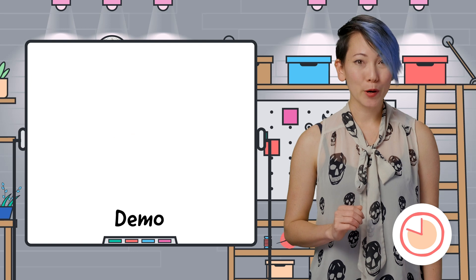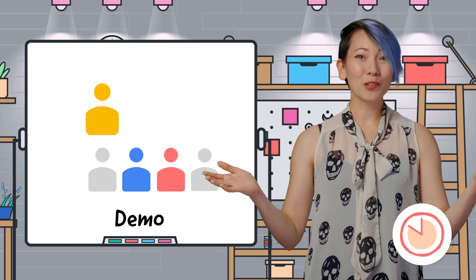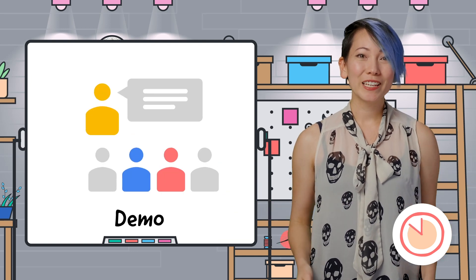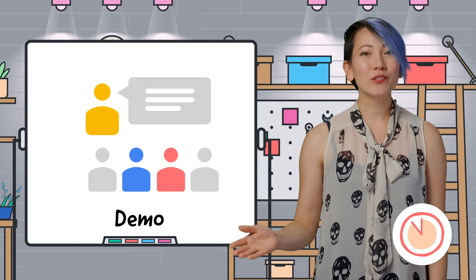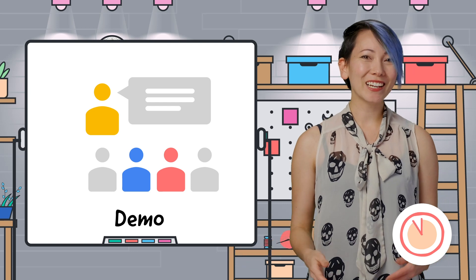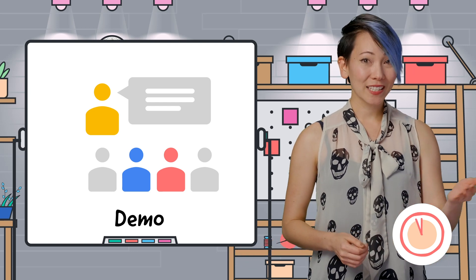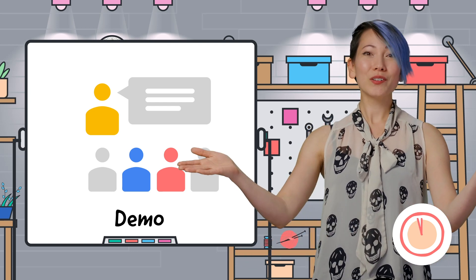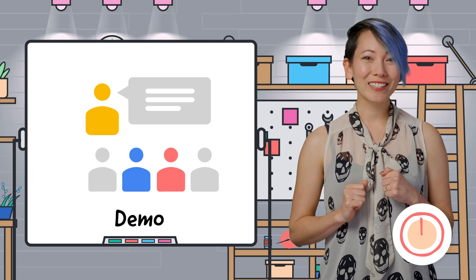Step 4: Demos. Show off what you accomplished this sprint. Give teammates the opportunity to demonstrate functionality and review each other's work. Invite stakeholders and other teams that are impacted by this work, too.